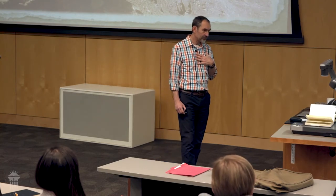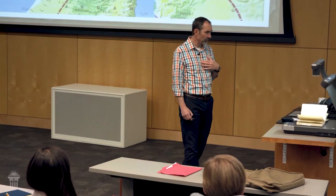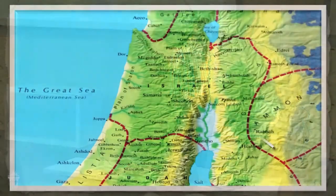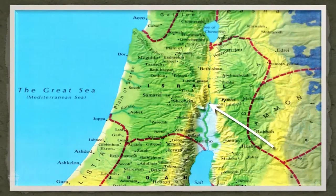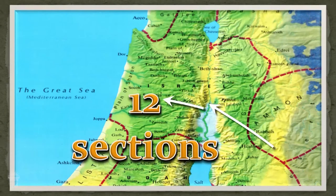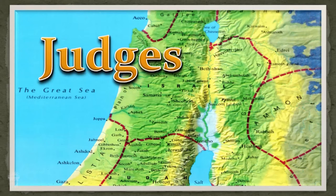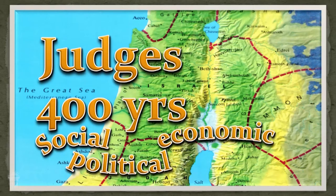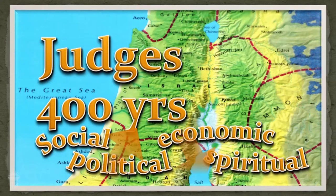God raises up a new generation and a new leader named Joshua, who leads the people through the Jordan River and into the land of Israel, dividing it up into 12 sections. Now they're ruled by people called judges, which lasts for 400 years. They have a series of social, economic, political, and spiritual ups and downs.